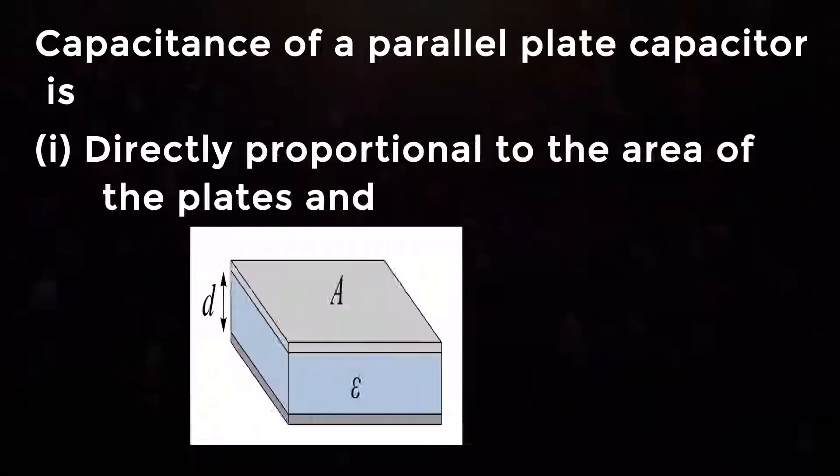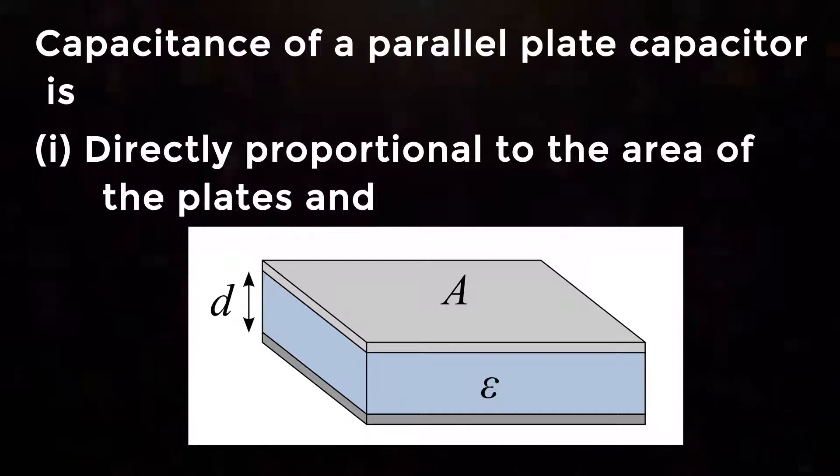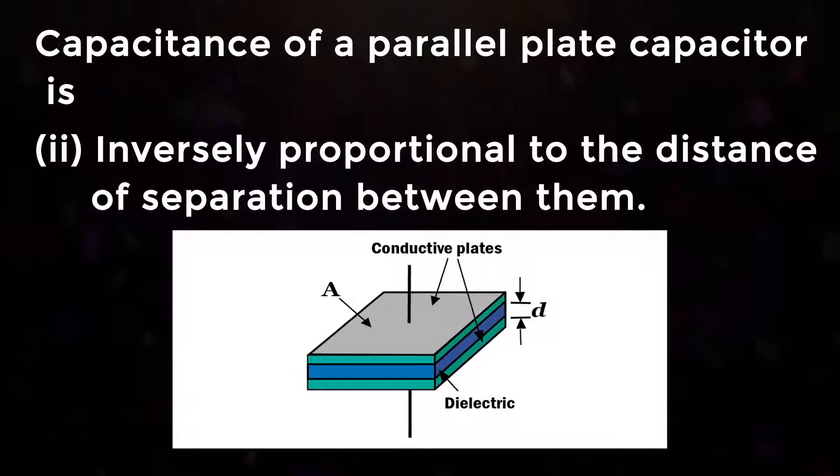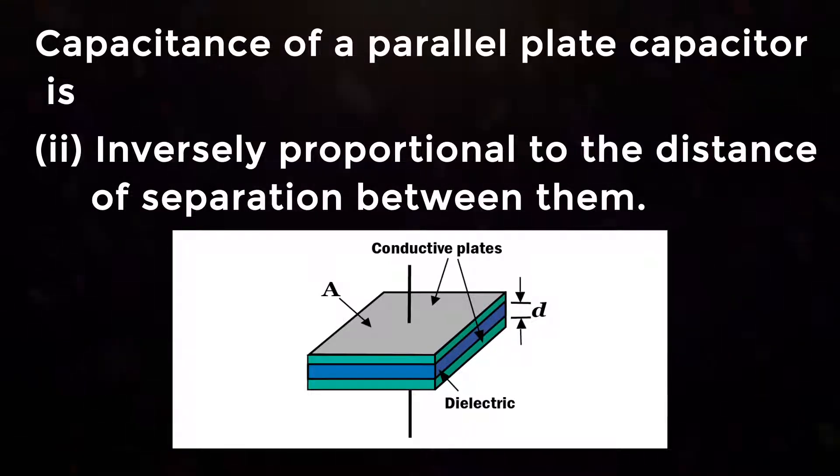Capacitance of a parallel plate capacitor is one, directly proportional to the area of the plates, and two, inversely proportional to the distance of separation between them.